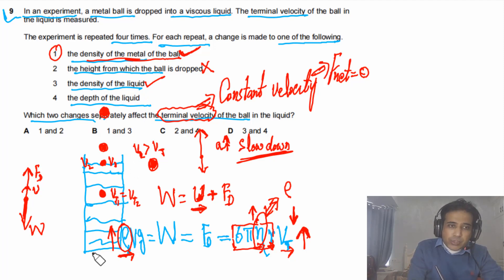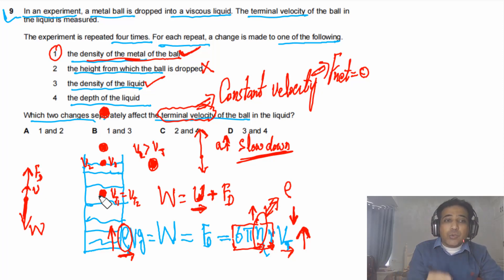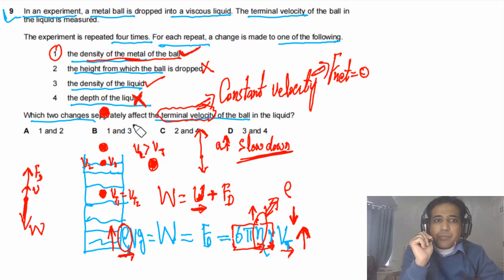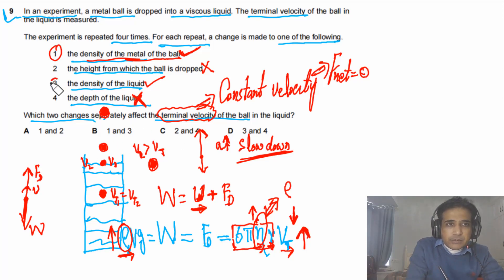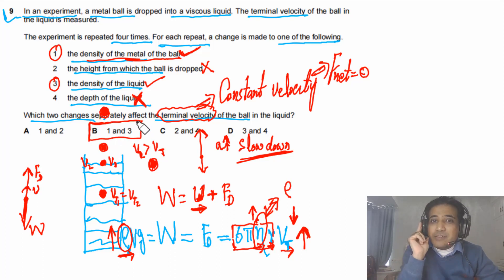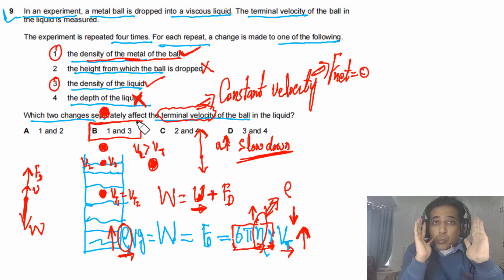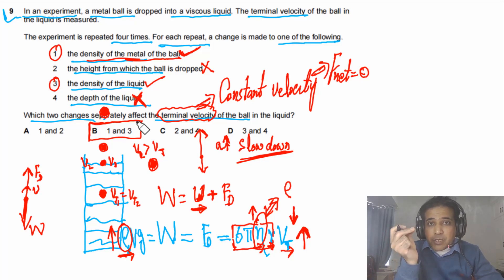The depth of the liquid doesn't matter — when the ball has reached terminal velocity it just continues at the same velocity downward. So the two changes that affect terminal velocity are density of the metal ball and density of the liquid. The answer for this question is B. Try to visualize this problem; if it's not clear, watch the video again and leave questions in the comments.